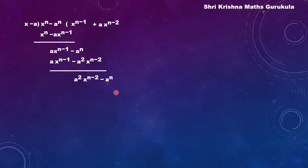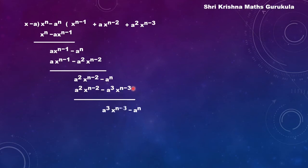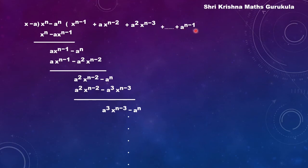Since this is a polynomial, we keep getting terms and this continues. The next quotient term is a squared into x to the power n minus 3. Multiplying and subtracting, we get a cubed into x to the power n minus 3 minus a to the power n, and so on. The next term would be a cubed into x to the power n minus 4, and this continues until we reach a to the power n minus 1 and x to the power n minus n. Since x to the power n minus n equals x to the power 0 equals 1, the division terminates at a to the power n minus 1.